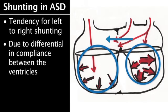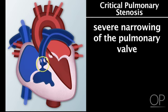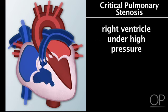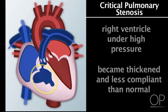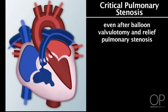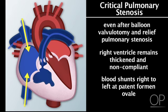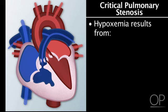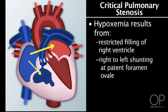Shunting can work the other way. Babies with so-called critical pulmonary stenosis have severe narrowing of their pulmonary valve, which they had in utero. As a result, the right ventricle worked under very high pressure and became considerably thicker and less compliant than normal. Even after balloon valvulotomy and relief of their severe pulmonary stenosis, because the right ventricles are substantially thicker and non-compliant, when blood enters the right atrium from the two vena cava, it tends to move right-to-left across the patent foramen ovale into the left atrium. These babies can be quite hypoxemic because of restricted filling of the right ventricle.